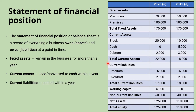Next we have current liabilities. As liabilities, these are things that we owe, but they are settled within a year. Examples include creditors, or payables — money owed to other businesses, perhaps for things purchased on trade credit — and overdrafts, which are agreed short-term overspends on a bank account.